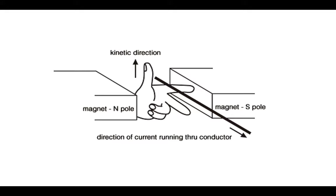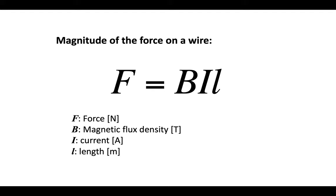Here's the same situation in a slightly different diagram. There's a magnet on the left-hand side with the north pole and on the right-hand side with the south pole, so the first finger points from north to south - that's always the direction you go. The wire has an arrow indicating the direction of conventional current - that's the second finger. So the thumb gives the thrust or kinetic direction, which in this case will be upward. The magnitude of that force depends on the strength of the external magnetic field - the magnetic flux density B in units of tesla - and also on the size of the current I in the wire.